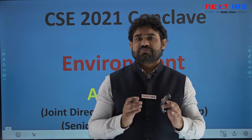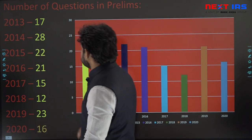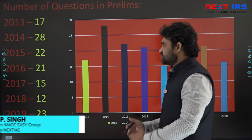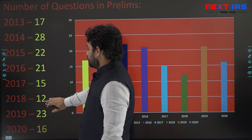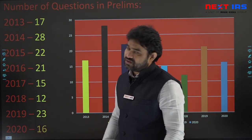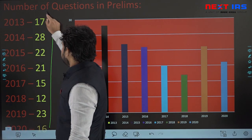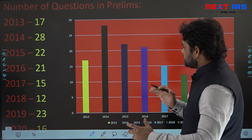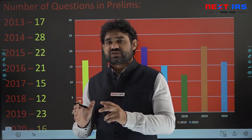Hello everyone. We will now discuss environment from the civil services examination point of view. As we have already discussed, from the prelims examination point of view, most questions come from the environment area. Looking at the number of questions asked in past years after the 2013 pattern changes: 2013 had 17 questions, 2014 had 28, 2015 had 22, 2016 had 21, 2017 had 15, 2018 had 12, 2019 had 23, and 2020 had 16. Roughly around 16 to 20 questions come from this part, and if you prepare this area you will get an edge in the civil services prelims.